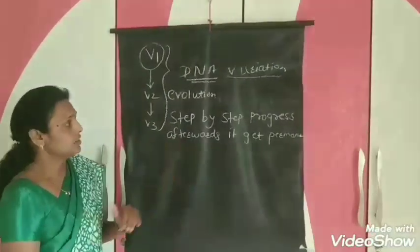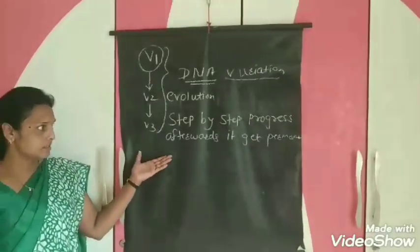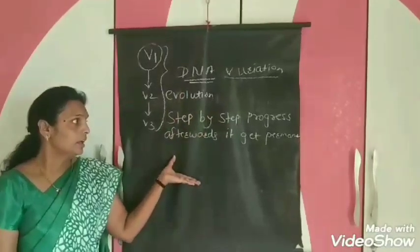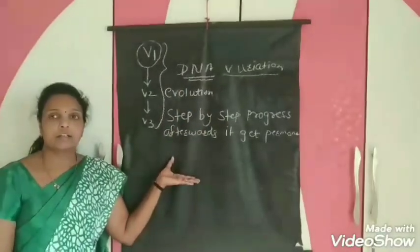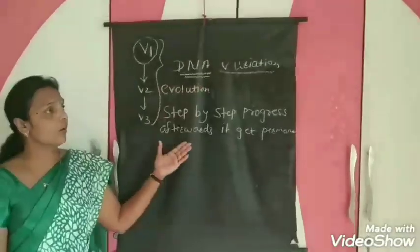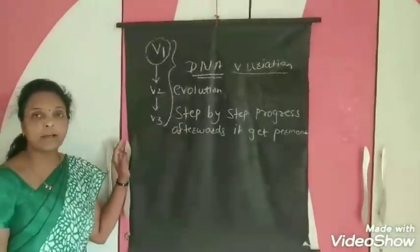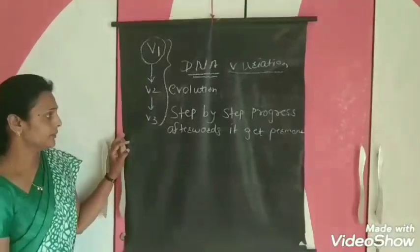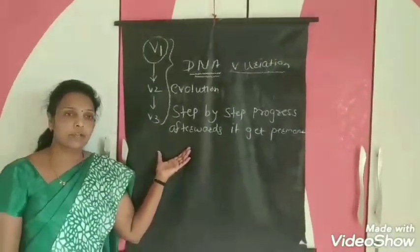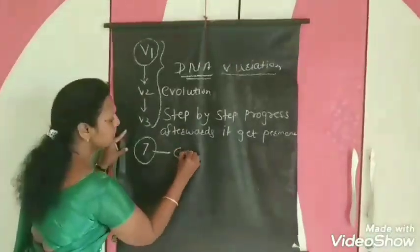Gregor Mendel, who is called the father of genetics, conducted experiments on DNA copying. He studied how evolution occurs from old forms to modern ones. For this, he selected one plant: Pisum sativum. He chose Pisum sativum because it offers seven contrasting characters.